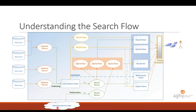Besides using the local SharePoint search index, we can use a remote search index as well. This remote search index can be a remote SharePoint, and with specific configuration it can be Office 365, FAST Search for SharePoint 2010, or anything supporting the OpenSearch standard — meaning the search engine can provide results in the proper format. You can use Bing as a remote search index, but you cannot use Google, for example.